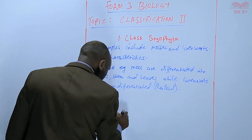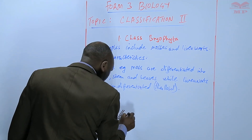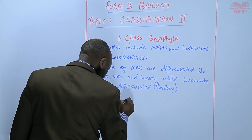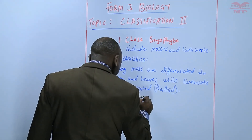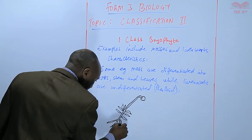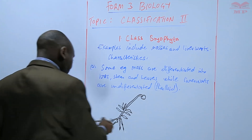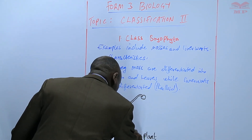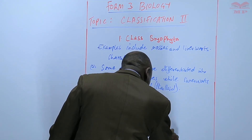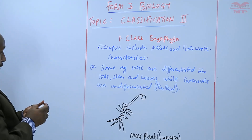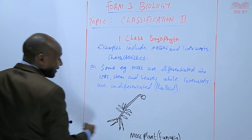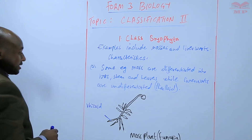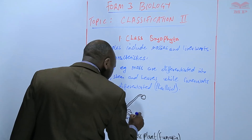We'll have the moss here, having the leaves. This is the moss plant, also known as the funaria. For the moss, this one is differentiated — we can see the root-like structures, which we refer to as rhizoids. We have a rhizoid there, and then we have the leaves; you can see the leaf there.